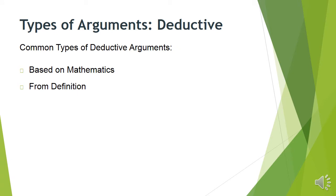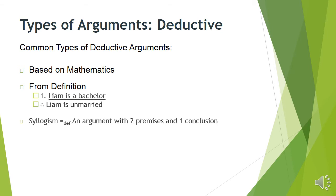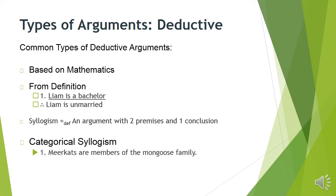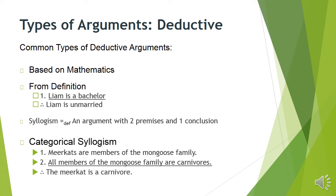Other types of deductive arguments include arguments from math or from definition. So: Liam is a bachelor; therefore, Liam is unmarried — because the definition of 'bachelor' already includes something like 'unmarried male.' There are also categorical syllogisms: meerkats are members of the mongoose family; all members of the mongoose family are carnivores; therefore, the meerkat is a carnivore. We're talking about groups or categories and relating them to each other — all A's are B's, all B's are C's, therefore all A's are C's.